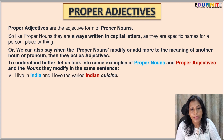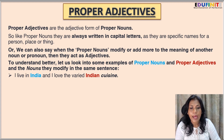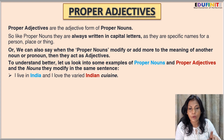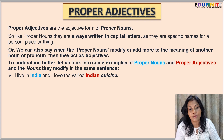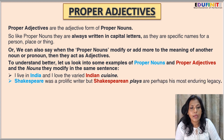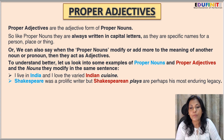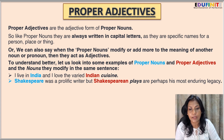'I live in India and I love the varied Indian cuisine.' Here the word 'India' is a proper noun and the word 'Indian' is a proper adjective modifying the noun 'cuisine.' In the next sentence: 'Shakespeare was a prolific writer, but Shakespearean plays are perhaps his most enduring legacy.' Here 'Shakespeare' is a proper noun and 'Shakespearean' is a proper adjective modifying the noun 'plays.'